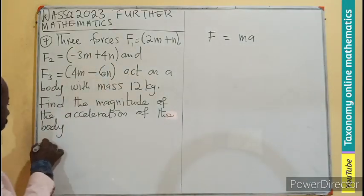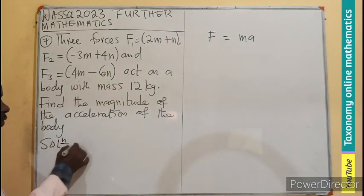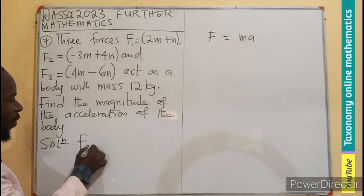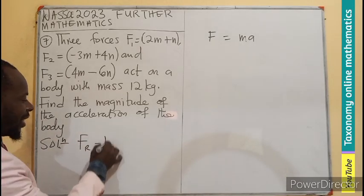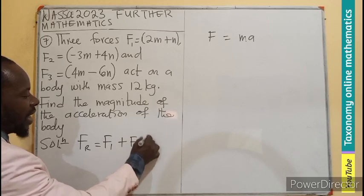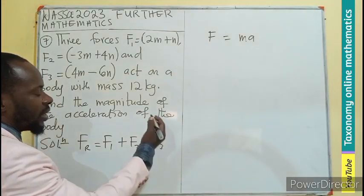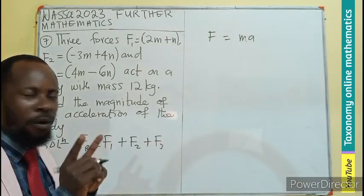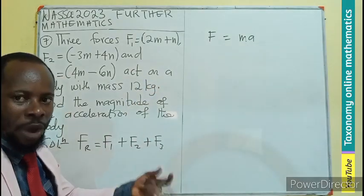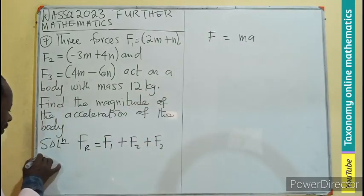So we need to find the total force, which is called the resultant force. In order to find the resultant force, we know it's going to be the addition of the first force plus the second force plus the third force. So I can have a single force, a single mass to work with.